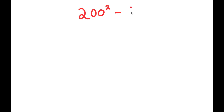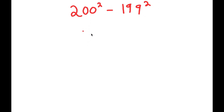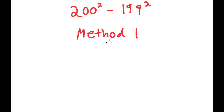In this video, I'm going to be solving the expression 200 squared minus 199 squared. I'm actually going to be using three different methods, so make sure to stick around for all three to find out which method is easiest for you. For method one, I'm first going to rewrite 200 squared as 199 plus one, squared.